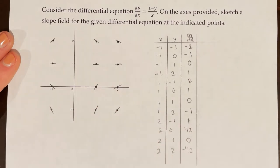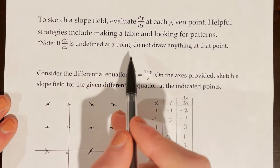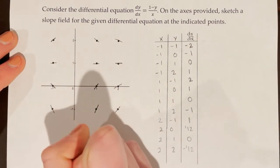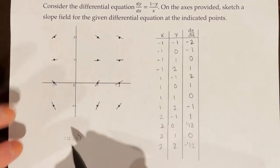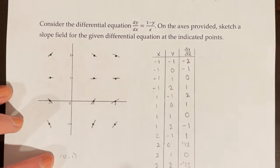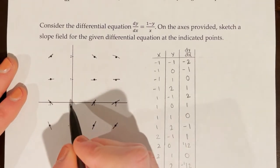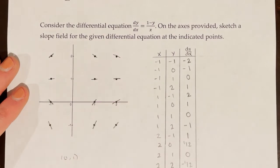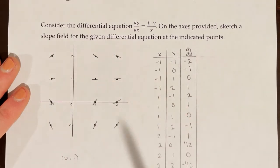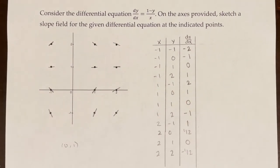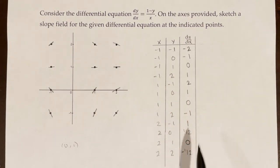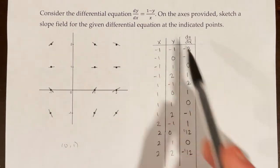This is our completed slope field. Note that if dy/dx is undefined at a certain point, we do not draw anything there. For example, at (0, 1): dy/dx = (1 - 1) / 0, which is 0/0 — undefined. The AP exam will leave such points blank so you don't have to draw anything. Looking for patterns saves a lot of time — identifying when dy/dx is always 0 avoids having to plug in every single time.